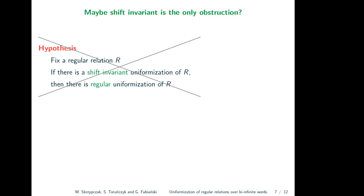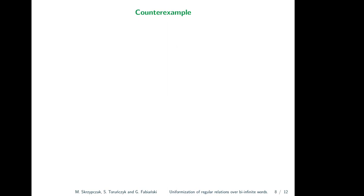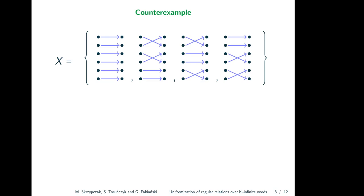I want to present what I believe is the smallest possible example of a regular language with this property. The input alphabet consists of four functions on six elements — four letters — which form a group isomorphic to Z₂ × Z₂. The output alphabet consists of a single letter. For every input word there are six bi-infinite blue paths, and we want to pick one uniformly. The input word u and output word w are related if the red arrows form a bi-infinite path and this path appears in the input.